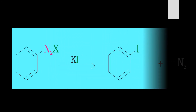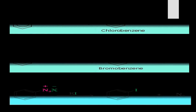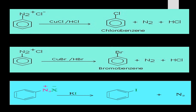When diazonium salt is simply shaken with potassium iodide, we get iodobenzene as the major product, and nitrogen gas is a byproduct. When aromatic diazonium salt is treated with different reagents, we get different aryl halides depending on the reagent. If treated with CuCl in the presence of HCl, we get chlorobenzene. If treated with CuBr (copper(I) bromide) in the presence of HBr, we get bromobenzene.